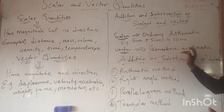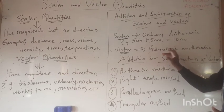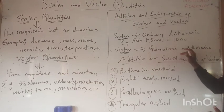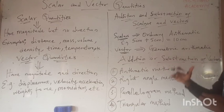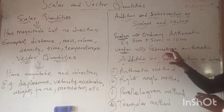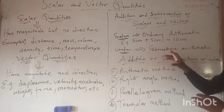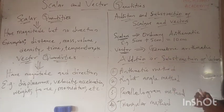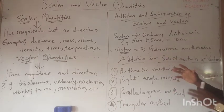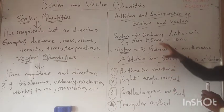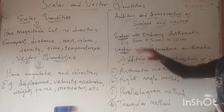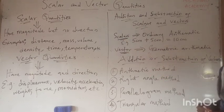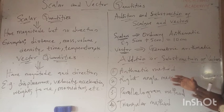With geometric arithmetic, we consider the direction of the particular vector quantity. This makes it a little more complicated compared with scalar quantities.